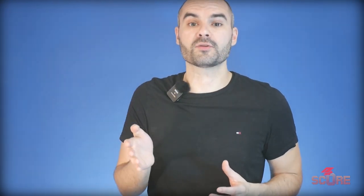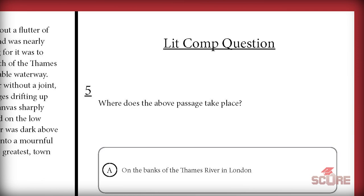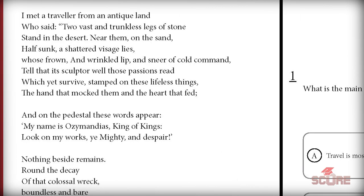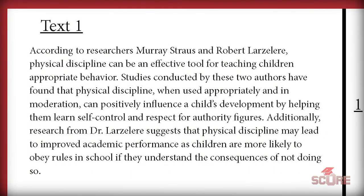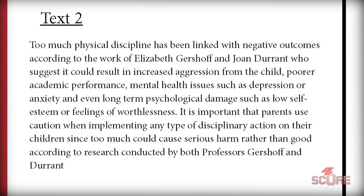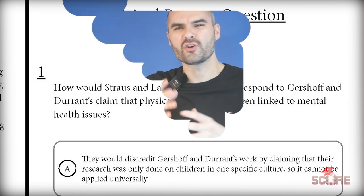Literature questions: instead of having a long literary text to read with a bunch of questions about characters and setting, you're going to get just a single small excerpt — one paragraph of literature — and a quick question probably about one of the characters or maybe just the main idea. Poetry can now appear on the SAT; I've seen Shakespeare's sonnets used as base material. Paired passages aren't dead yet — there are still some questions that give you two short paragraphs and ask what one author would say to the other.